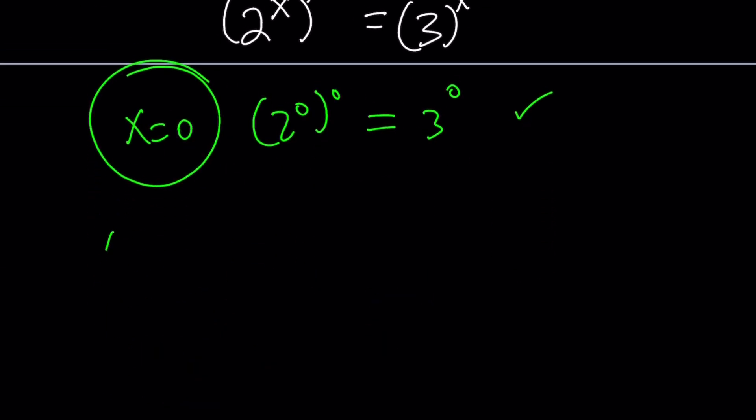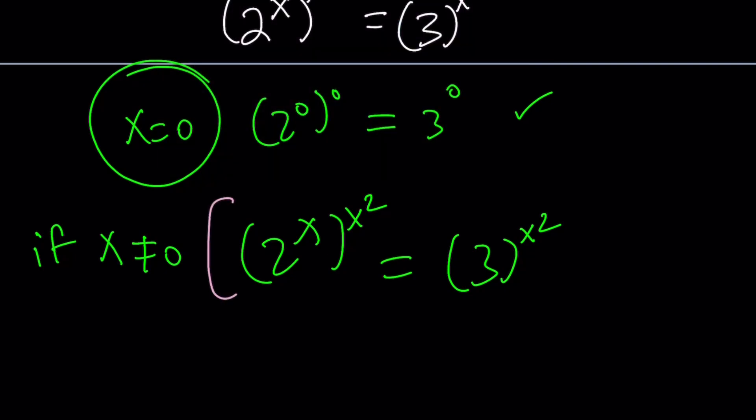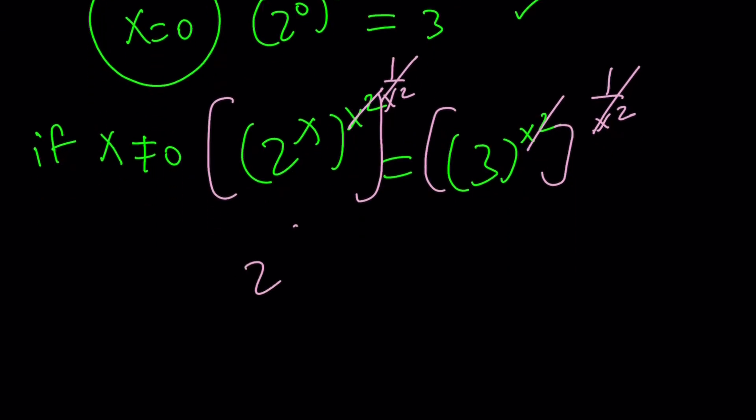Now, what if x does not equal 0? Then from here, I can basically get rid of the x squared. Raising both sides to the power 1 over x squared does that exactly, or you can just cancel it out. So if you raise both sides to that power, you end up with a simpler equation, such as 2 to the power x equals 3.